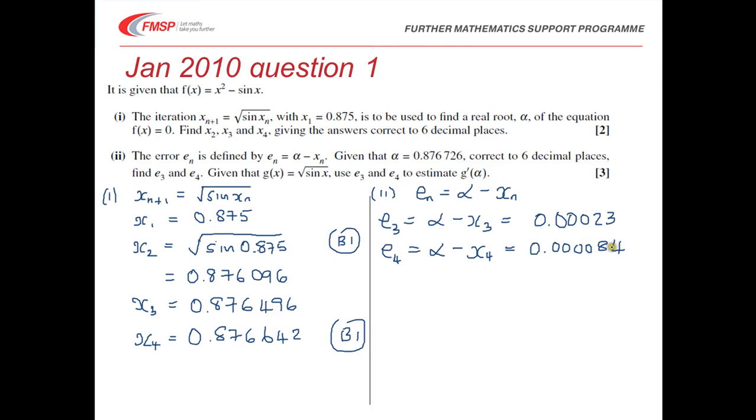The function is the square root of sin x, and we should know that the ratio of e_{n+1} to e_n is approximately equal to g'(alpha). So that's the relationship that you really need. In our particular case, g'(alpha) is going to be approximately equal to e_4 over e_3.